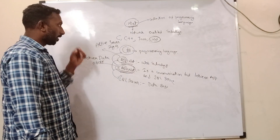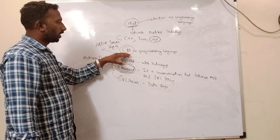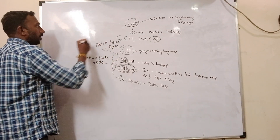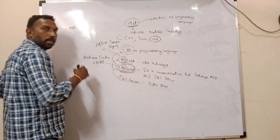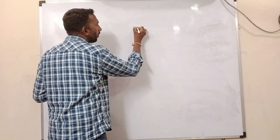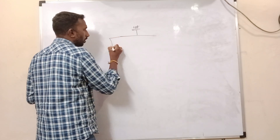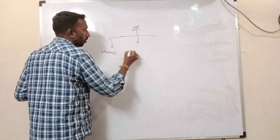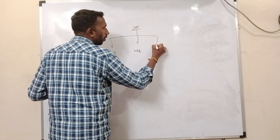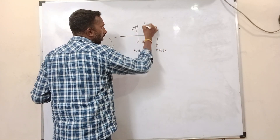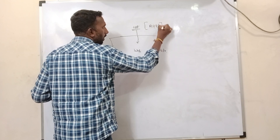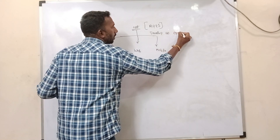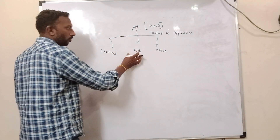We use C# as our programming language. So now you know what C#, ASP.NET, ADO.NET, and SQL Server are. We will now see what different types of applications we can develop using .NET. After learning any programming language, what you're going to do is develop an application. Using .NET, we can develop three types of applications: Windows applications, web applications, and mobile applications.